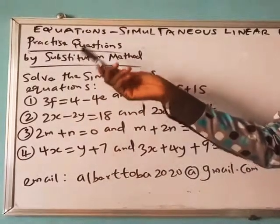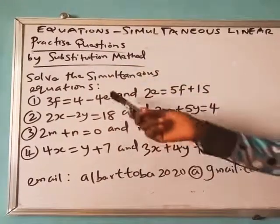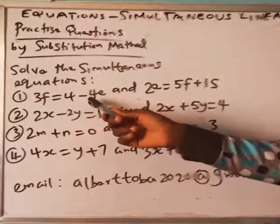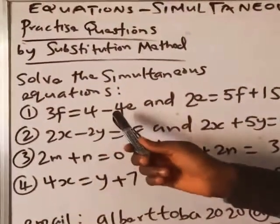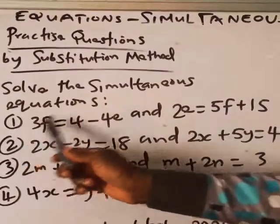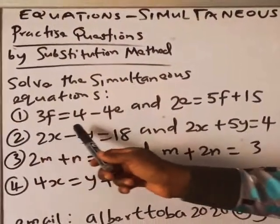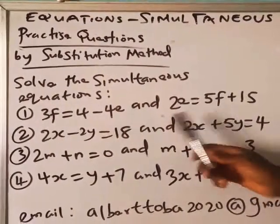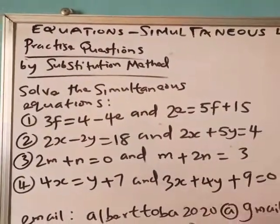These are the practice questions by substitution method. Work on these questions. For example, this first one now. You just rearrange. Minus 4e. You bring it here. It will become 4e plus 3e plus 4. You rearrange this with 2e minus 5e. So you use the substitution method to complete this.